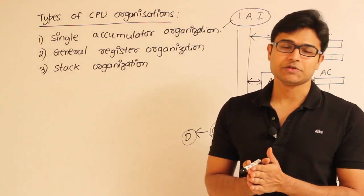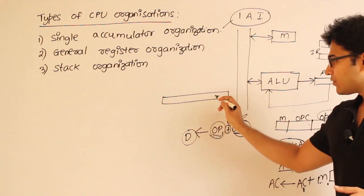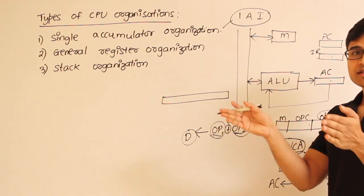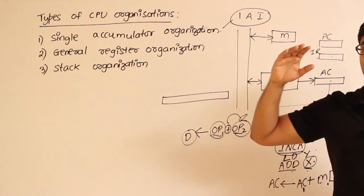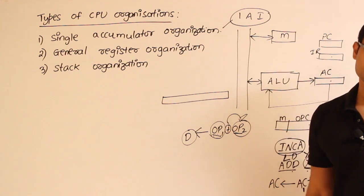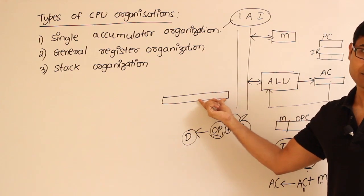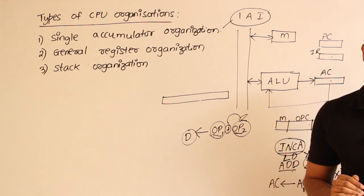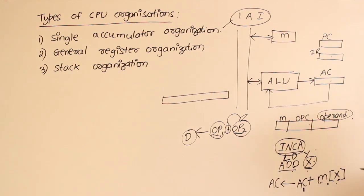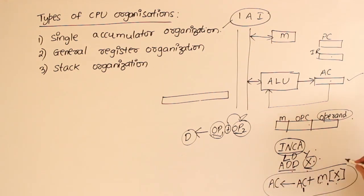The reason we try to reduce the number of addresses in an instruction is simple: if we reduce the number of addresses, we effectively reduce the size of the instruction. Once we reduce the instruction size, the space required to move and store the instruction is also reduced, simplifying many things including the cost of the computer. If we put many operands in an instruction, writing a program is easier but hardware cost increases.